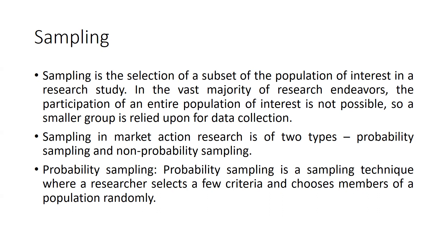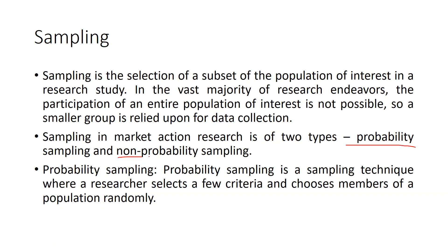A smaller group is relied upon for data collection. Sampling in market research is of two types: probability sampling and non-probability sampling. Probability sampling means each and every unit of that population has an equal chance to get selected, but non-probability sampling means each and every population unit does not have an equal chance of selection.